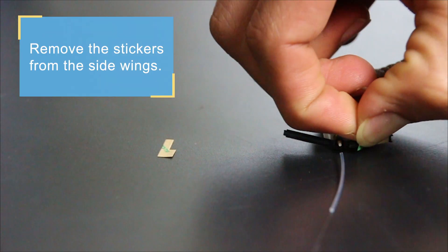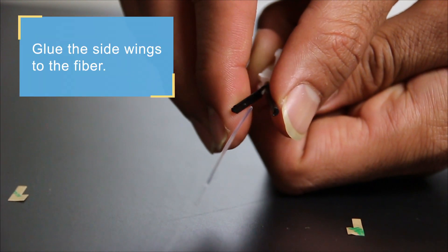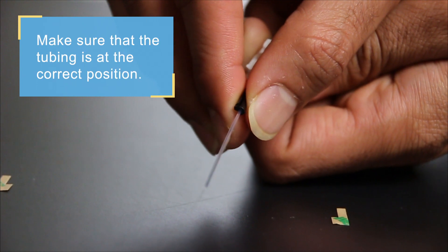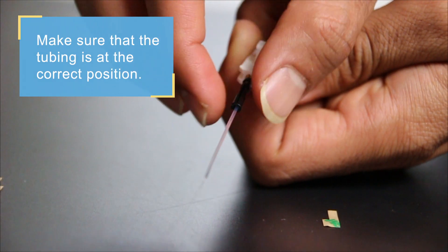Remove the stickers from the side wings. You can now glue the side wings to the fiber. Make sure that the tubing is at the correct position to be gripped by the side wings.